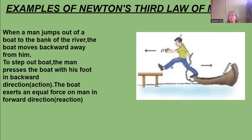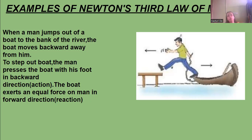When a man jumps out of a boat near the shore, he jumps onto the shore. When he takes the jump, the boat moves backward away from him. To step out of the boat, the man presses the boat with his feet in the backward direction — that is the action. The boat exerts an equal force on the man in the forward direction — that is the reaction — enabling him to jump out.